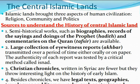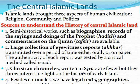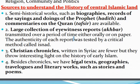Islamic Lands brought three aspects of human civilization: religion, community, and politics. The sources to understand the history of Central Islamic Land include semi-historical works such as biographies, records of the sayings and doings of the Prophet — this is the Hadith — and commentaries on the Quran. Also, large collections of eyewitness reports, that is the Akbar, transmitted over a period of time either orally or on paper.